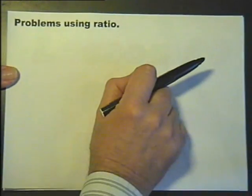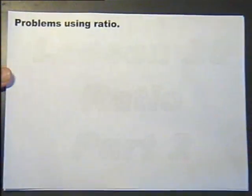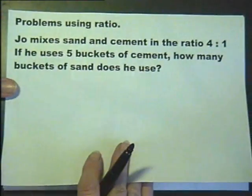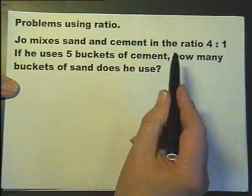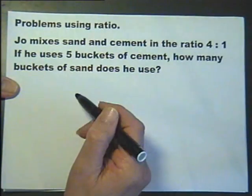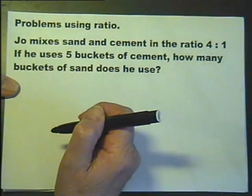We'll do a few problems that actually use ratios. Joe mixes sand and cement in the ratio of 4 to 1. If he uses 5 buckets of cement, how many buckets of sand does he use?